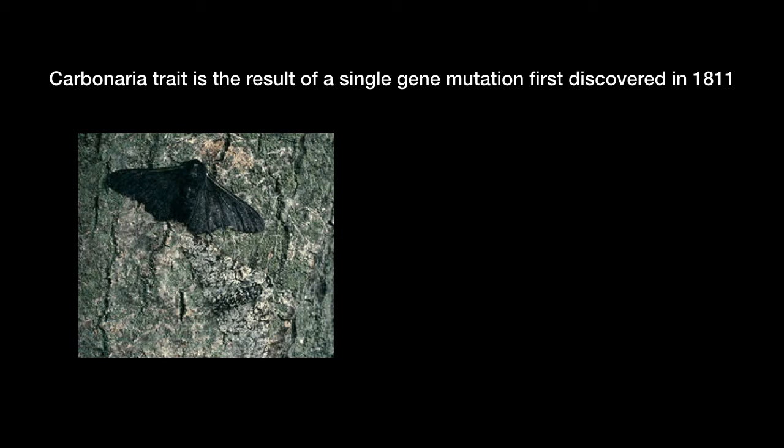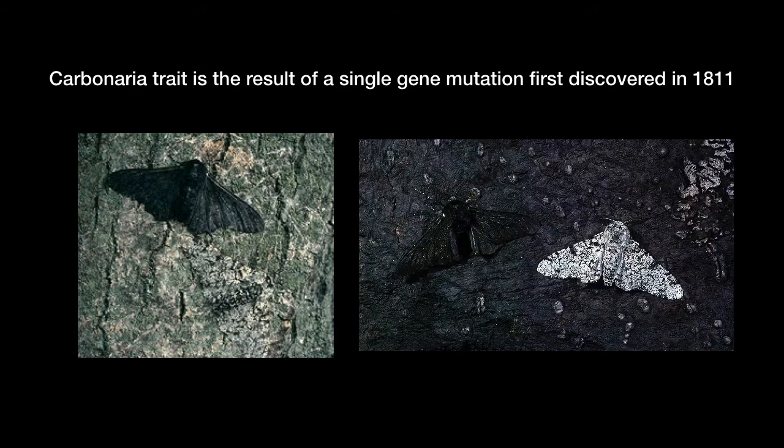The mutation did not occur because the environment changed. It was there already before it became beneficial to the organism. However, when the environment did change, the trait suddenly became beneficial by providing camouflage. After the environment changed, the number of dark-colored moths in the population increased significantly to as high as 98% of the population of moths in certain areas by 1895. The ultimate source of the genetic variation that produced two different colored moths, however, was just a random mutation.